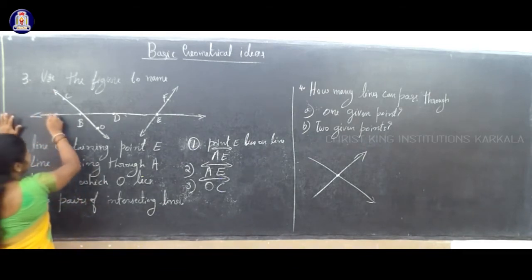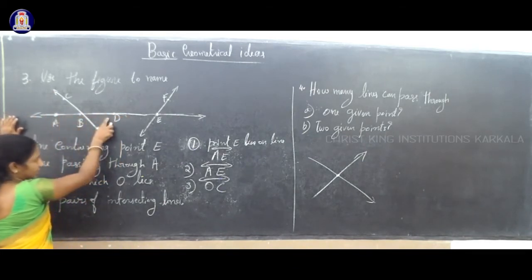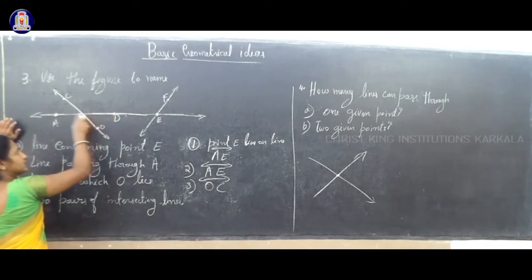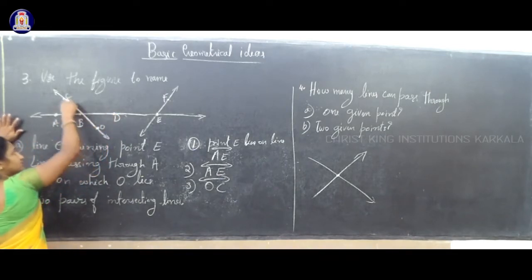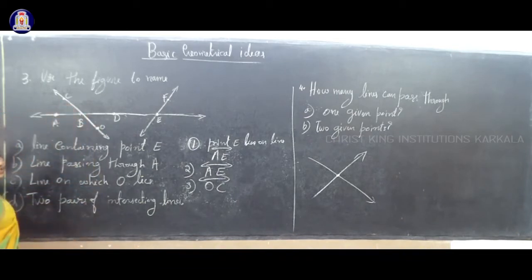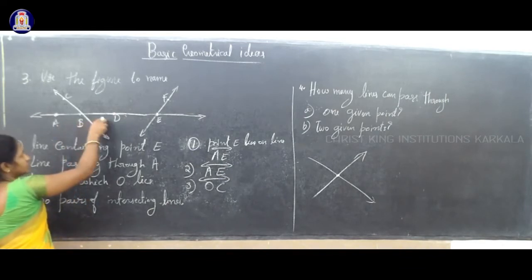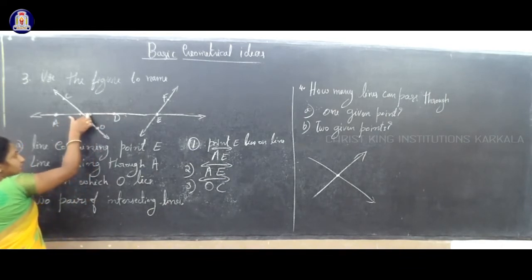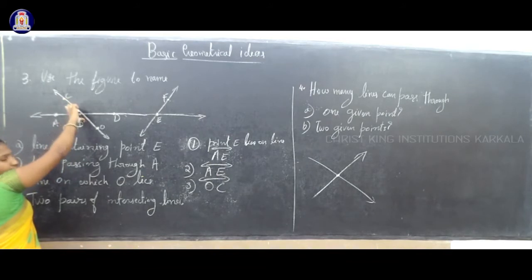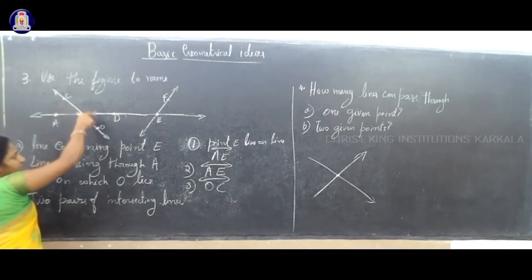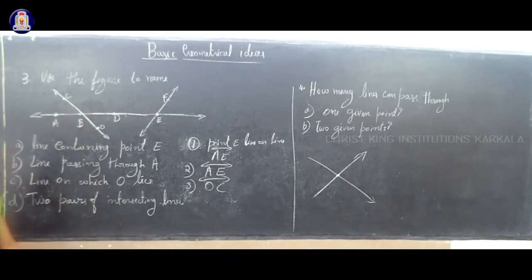One line you can consider is AD. You can say AD crosses another line, that is OC. So these two lines are intersecting lines. Which lines are intersecting? One is AD, and you can also say line segment AD and OC are the intersecting lines.